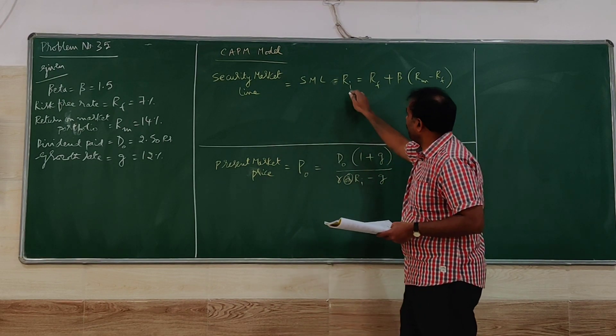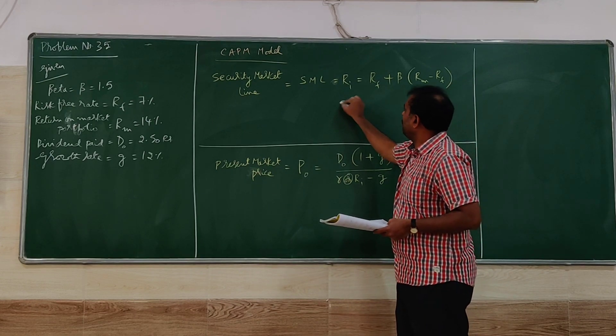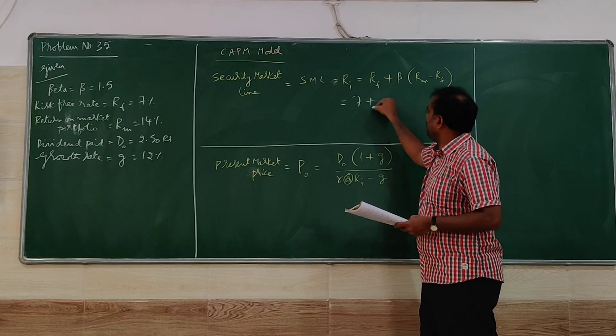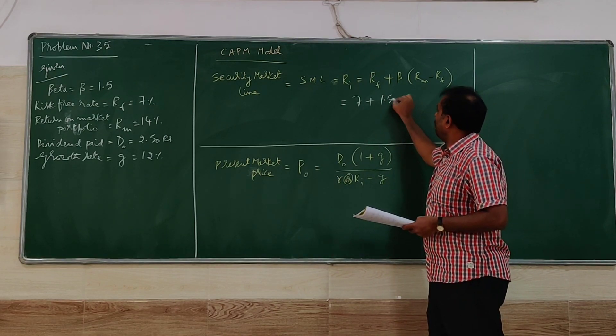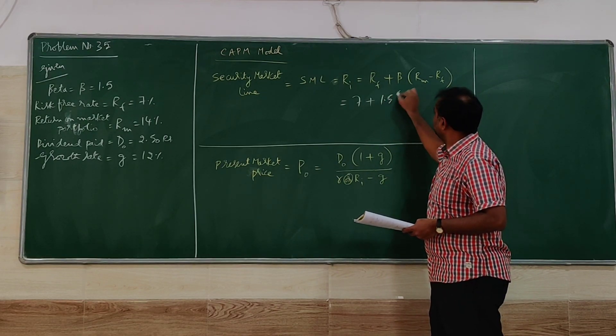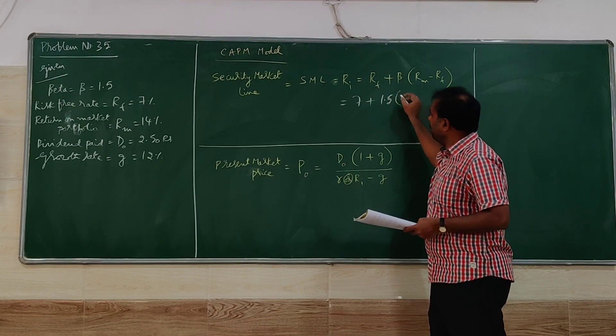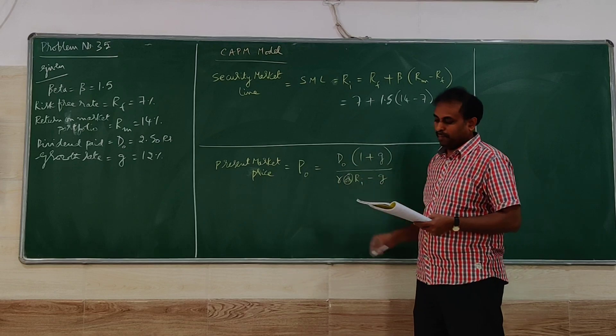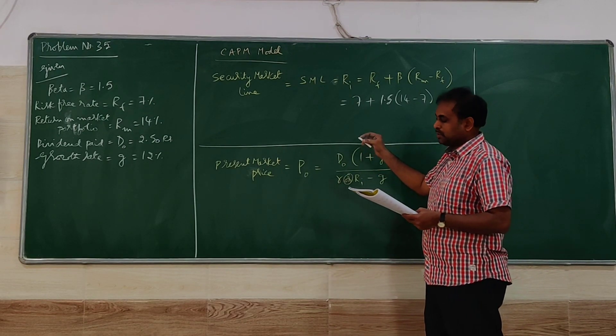we call it as RI also. Let me substitute the values here. RF equals 7, beta equals 1.5, RM equals 14, RF equals 7. So we have to go for simplification.